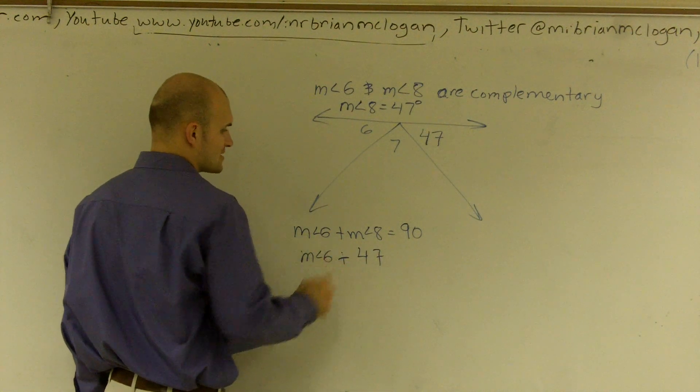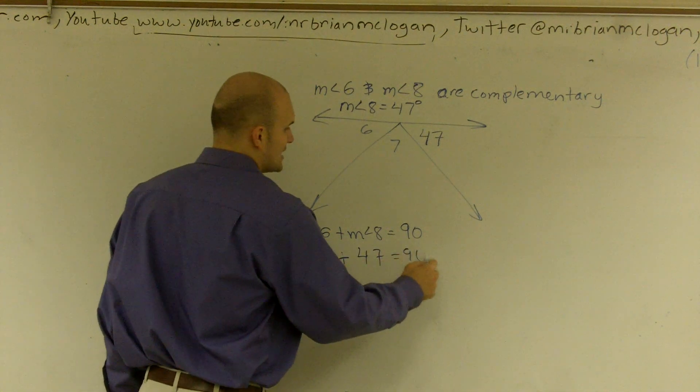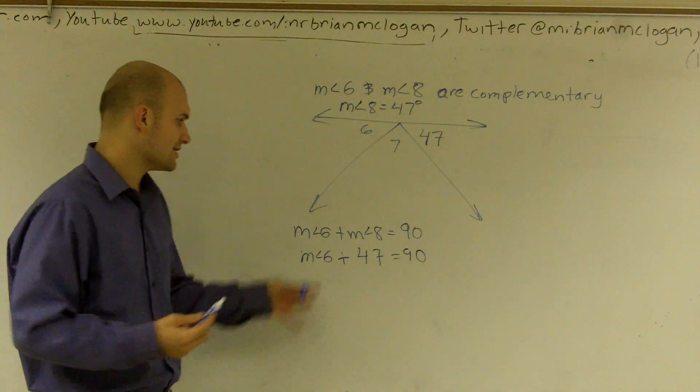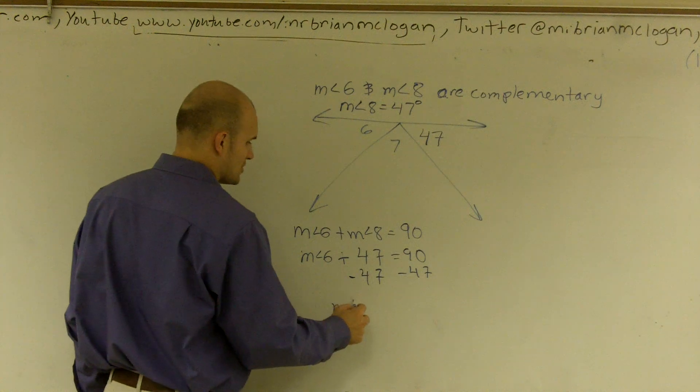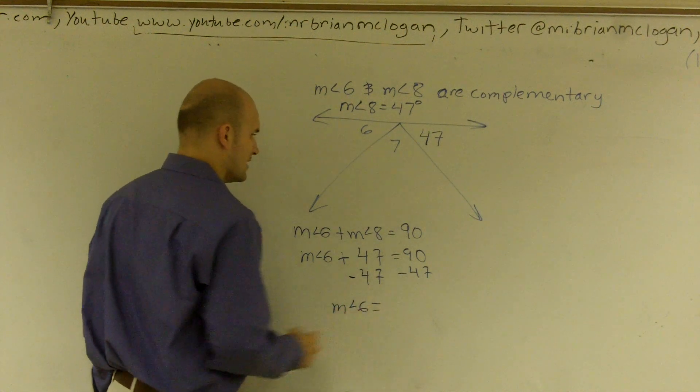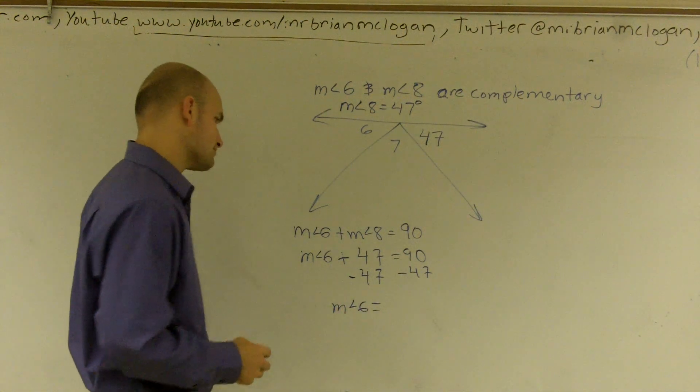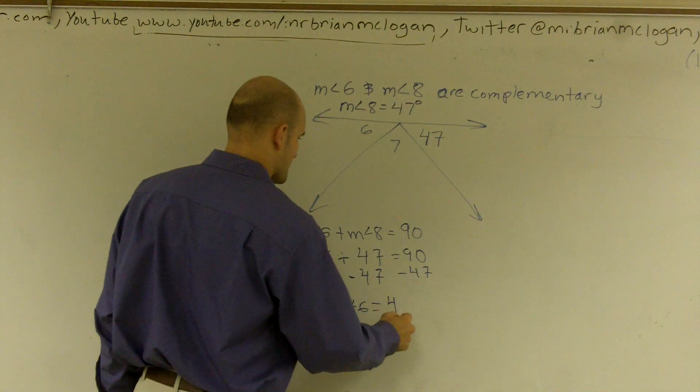plus measure of angle 6 equals 90. So now what I can do is subtract 47. What I get is measure of angle 6 is going to equal, let's see, 43.